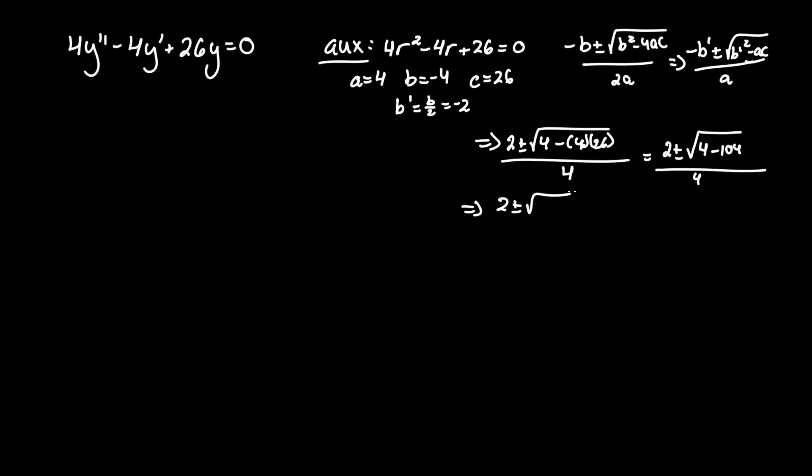So obviously, that equals 2 plus minus rad negative 100, over 4. Square root of 100 is 10. And we have to factor in the i equal to rad negative 1. So that becomes 2 plus minus 10i, over 4. And look at that, we can also divide everything by 2. So it's 1 plus minus 5i, over 2. And again, this is the root. So r equals 1 half, when you put it in standard format, plus minus 5 halves i.